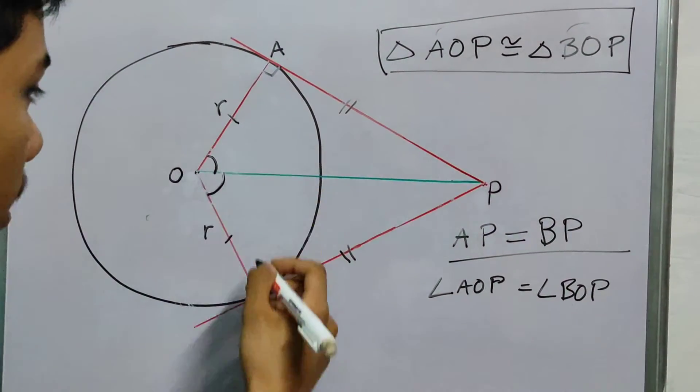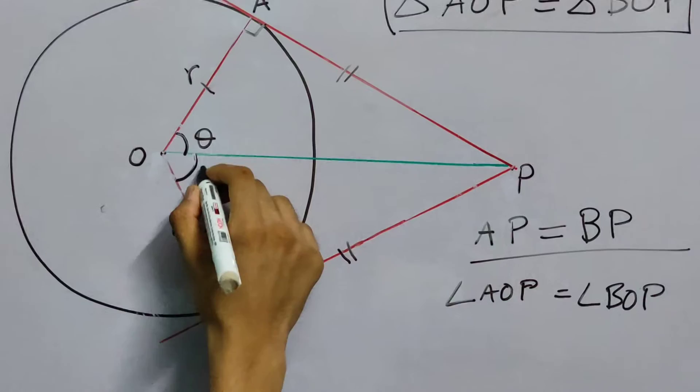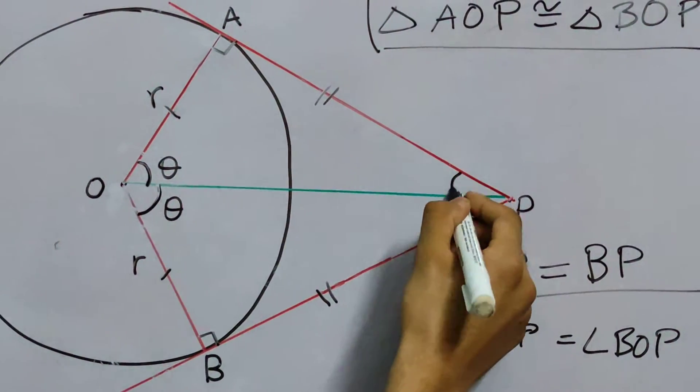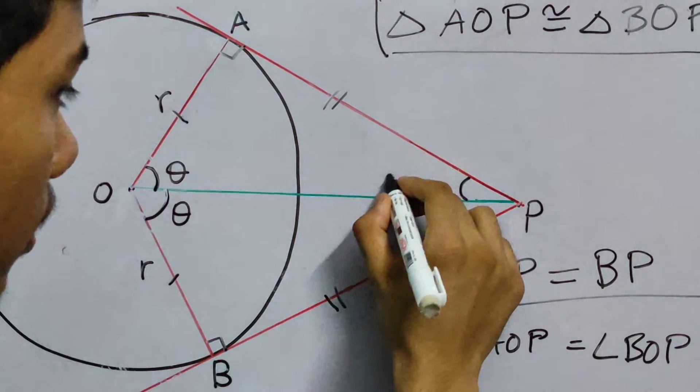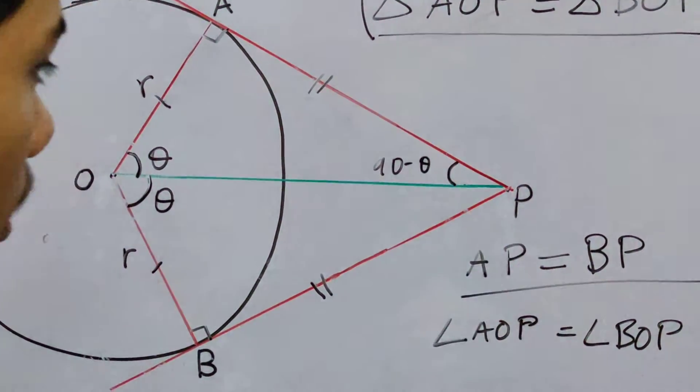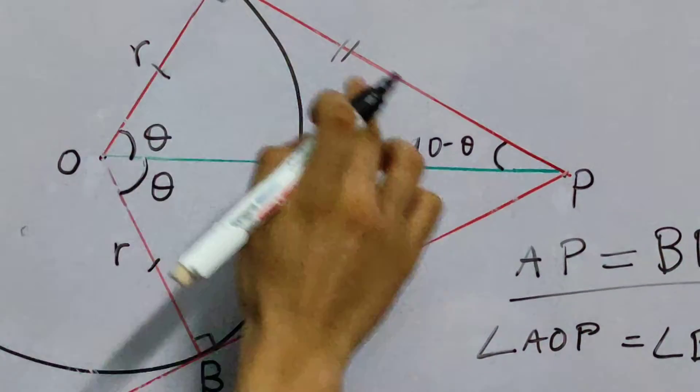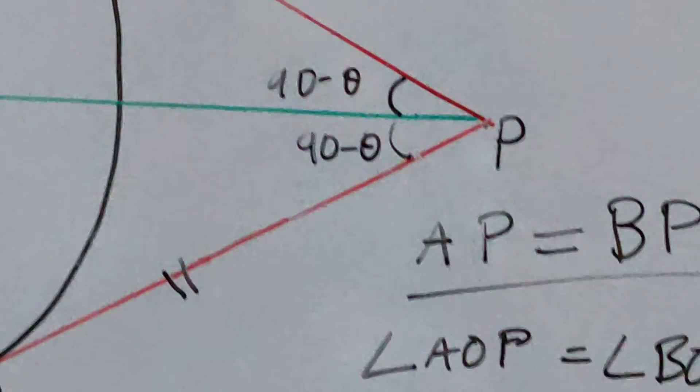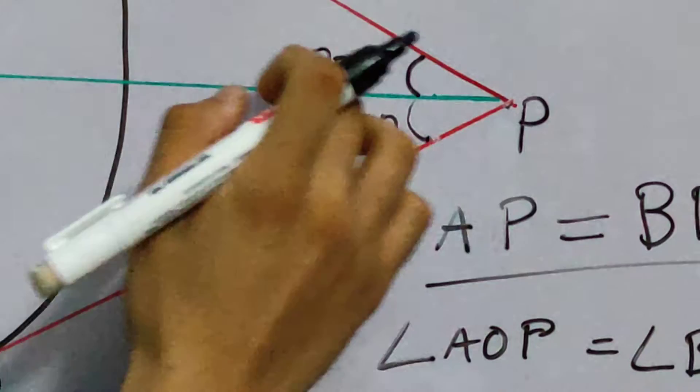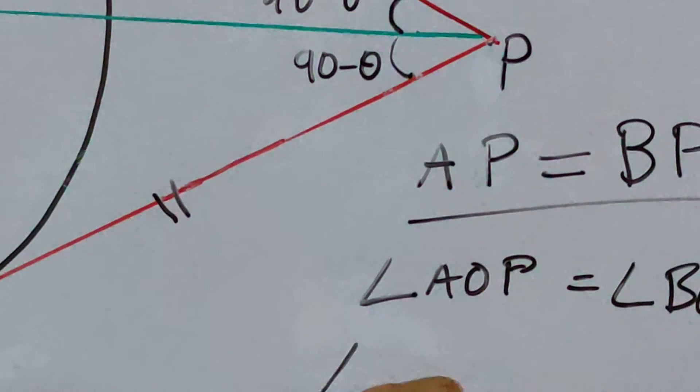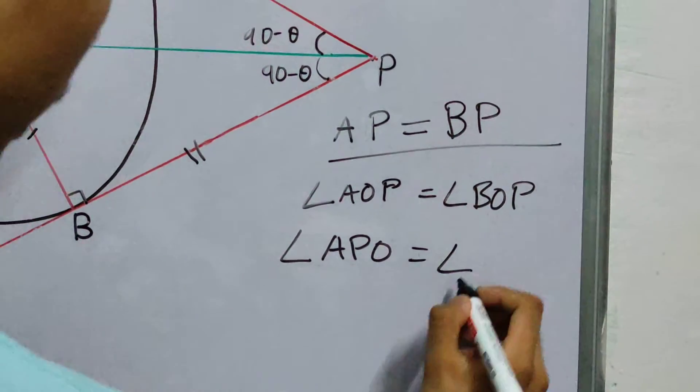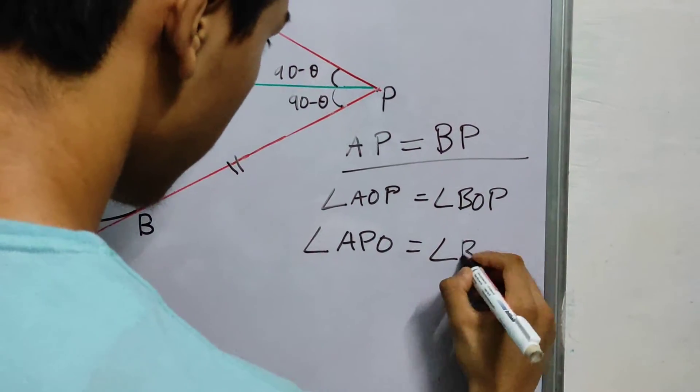From this, since these angles are equal, these two angles are equal. This is my theta. Let's call this theta. This will be 90 minus theta. Theta, 90, 90 minus theta. This will also be 90 minus theta. These two angles: angle APO will be equal to angle BPO.